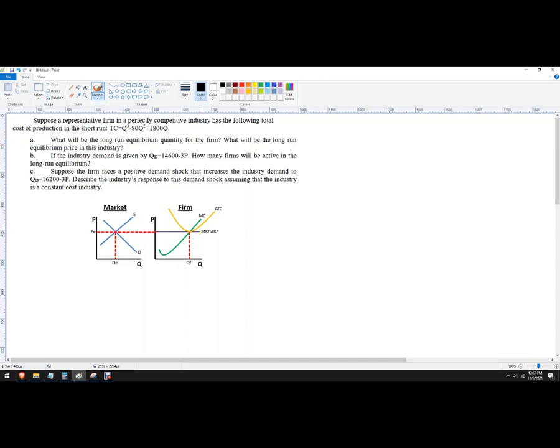Long run equilibrium quantity is this quantity right here. So what they're really saying is that in the long run, price is going to equal average total cost, which is also going to equal marginal cost, which is going to happen at the average total cost minimum for a single firm.